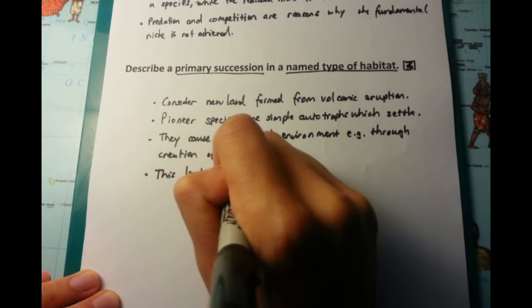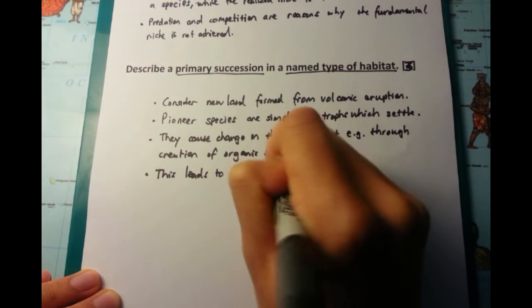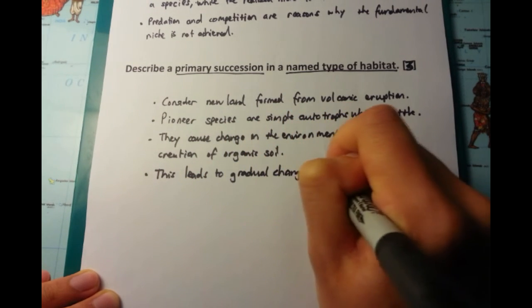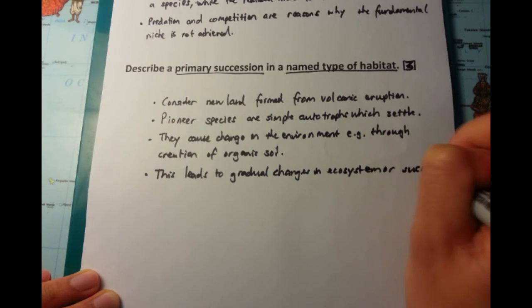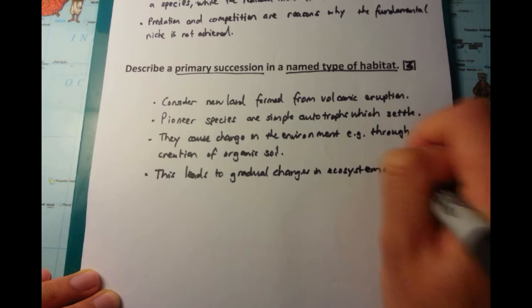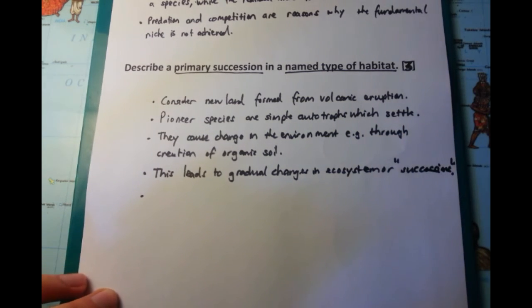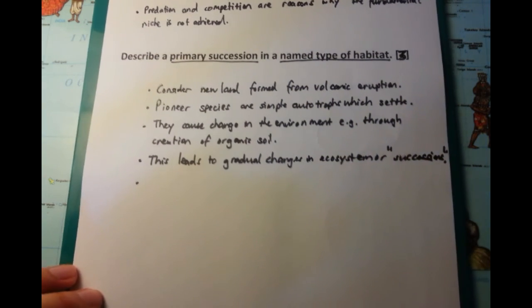Then this causes increasing change or gradual changes in the ecosystem, and these are known as successions. So the more successions there are, the more change there is. And a climax ecosystem may be achieved, and this is the ecosystem which is the most advanced.